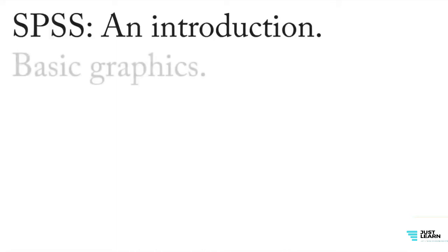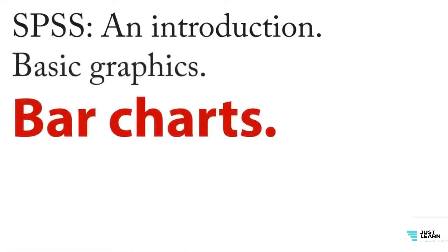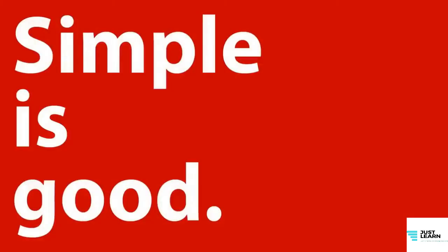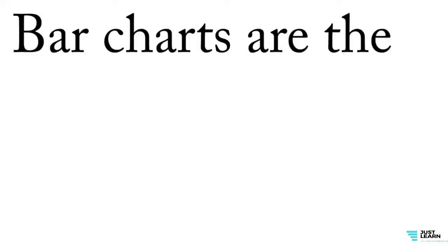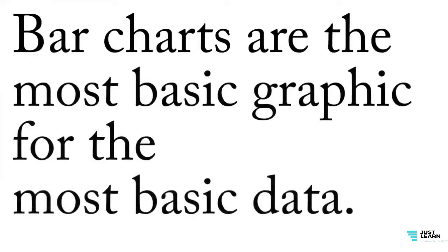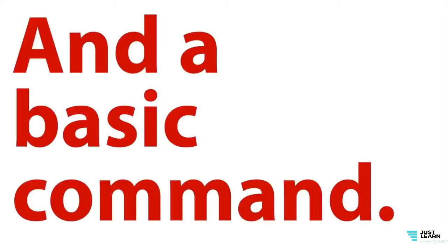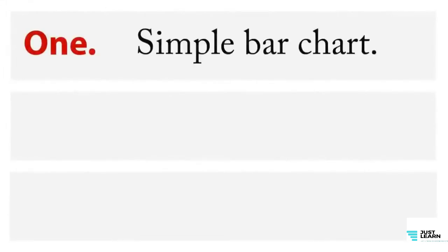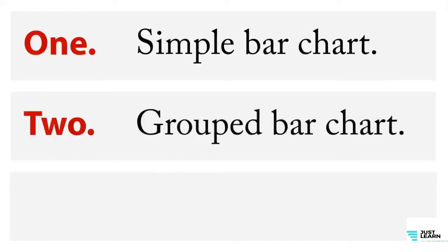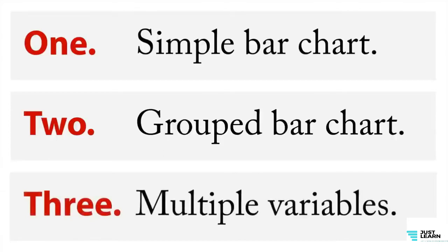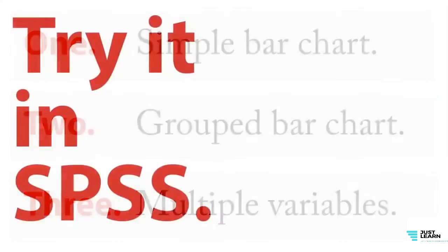The next step is bar charts — we like them for a very simple reason: they are simple, and simple is good. More specifically, bar charts are the most basic graphic for the most basic data — just frequencies for a simple category. It's also a very basic command in SPSS. We have a few options: a simple bar chart showing category frequencies, a grouped bar chart where we break it down by some other variable, and multiple variables showing bars simultaneously.